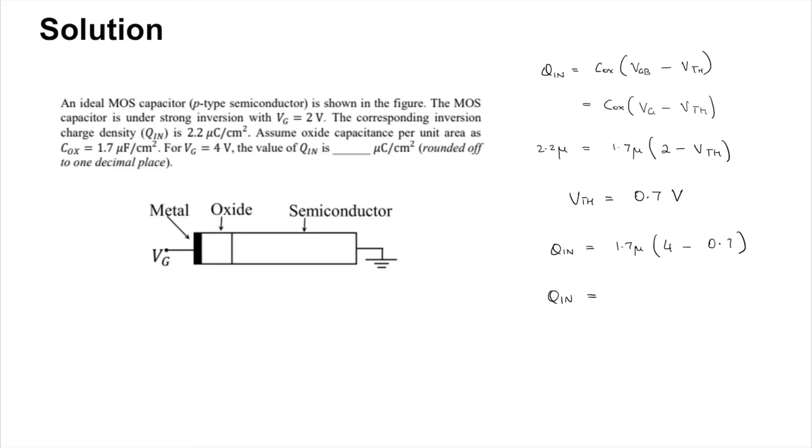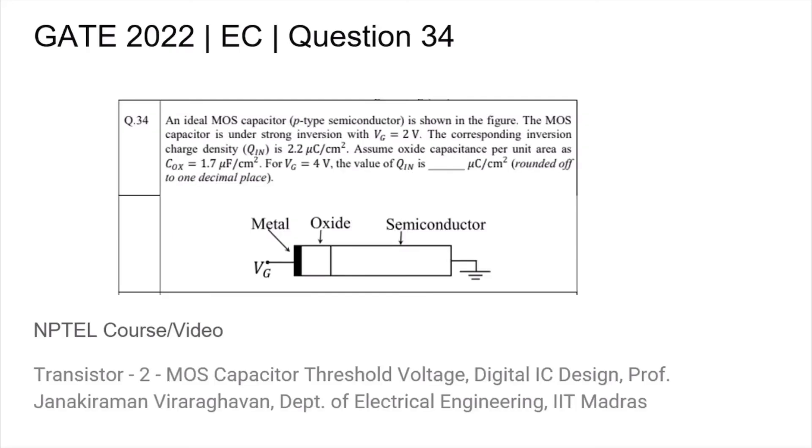that the value of Q is 5.6 micro coulombs per centimeter squared. Thus, the answer is 5.6.